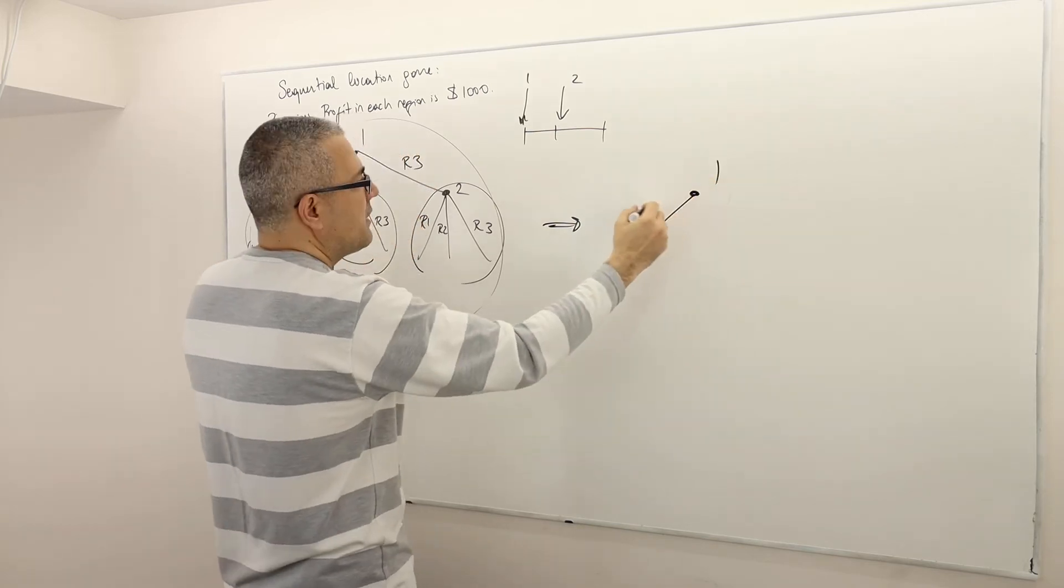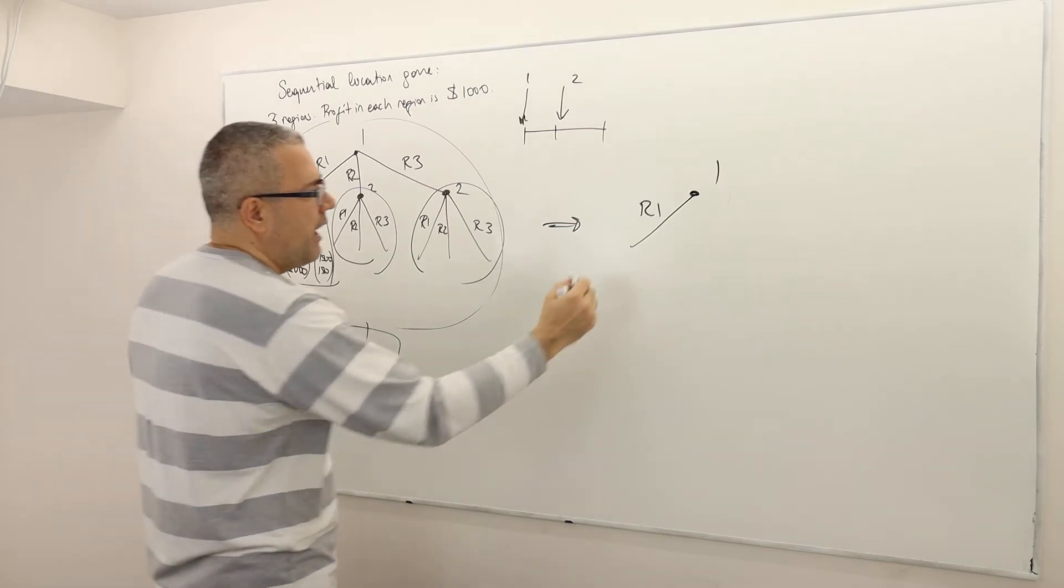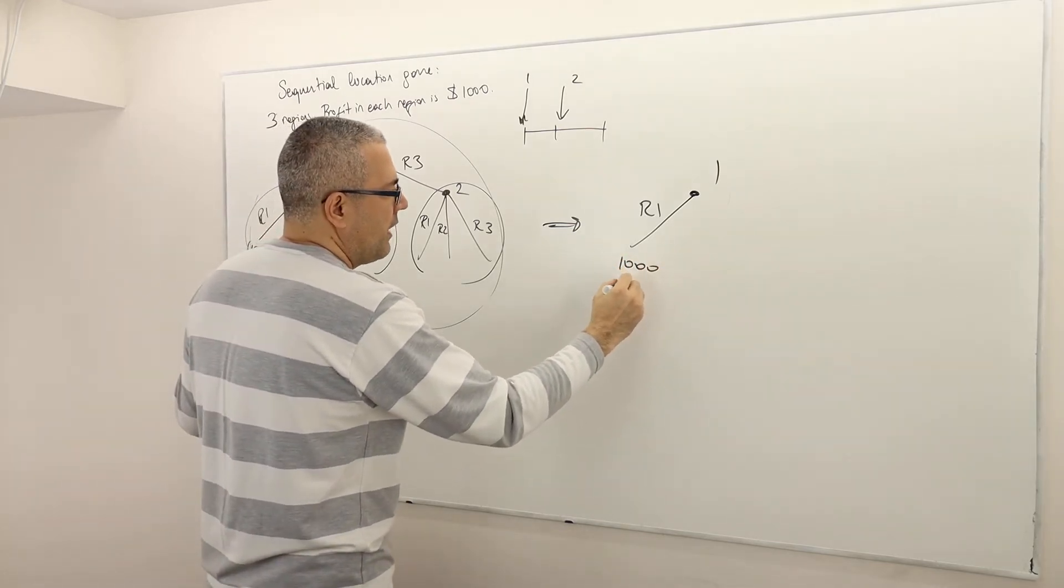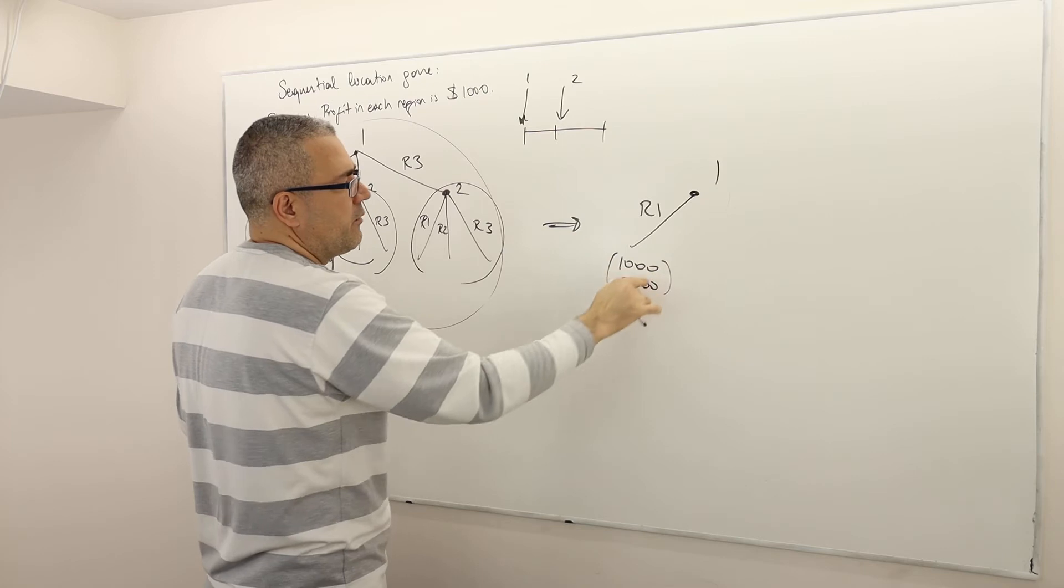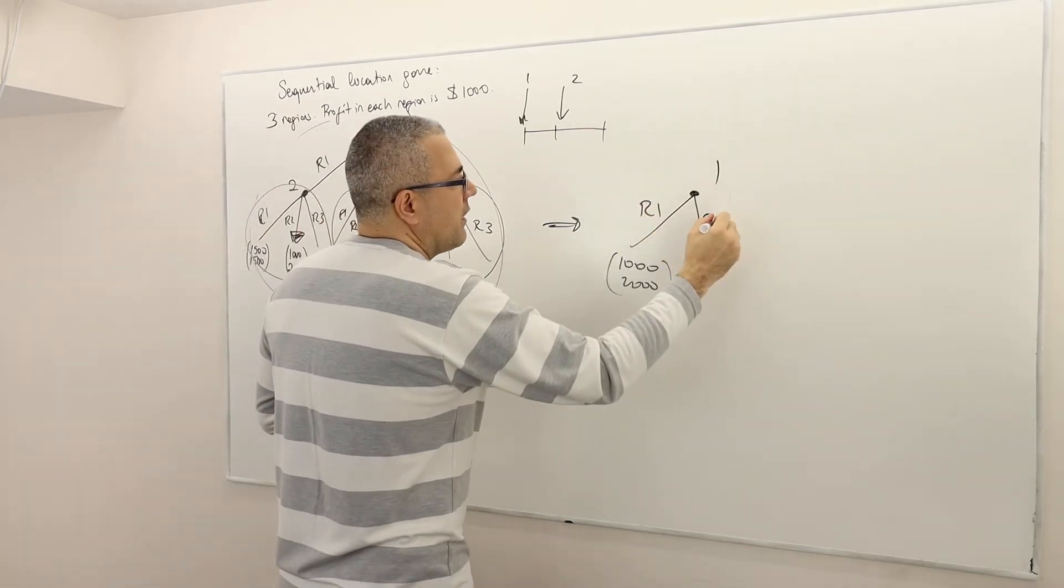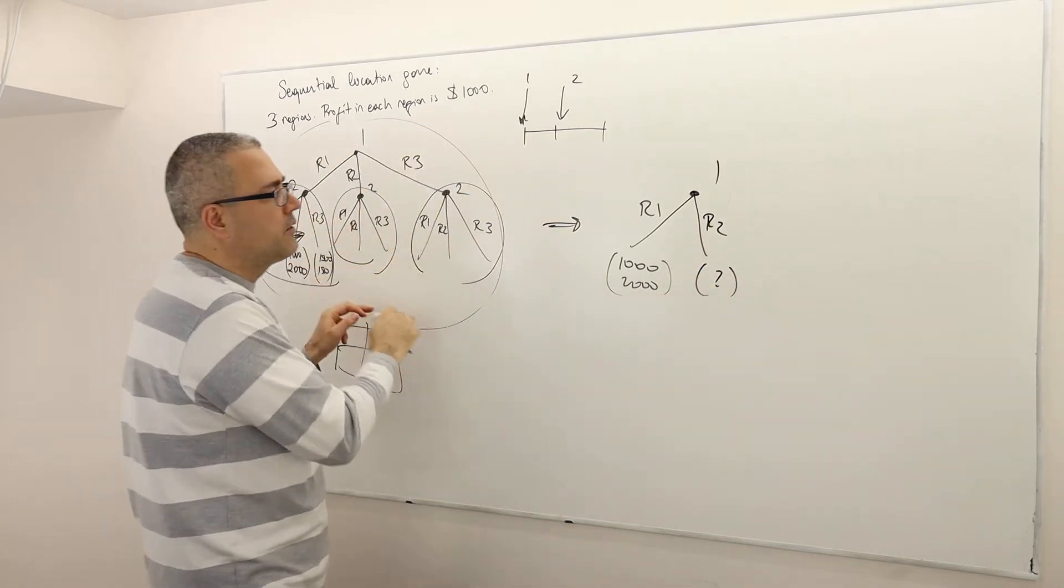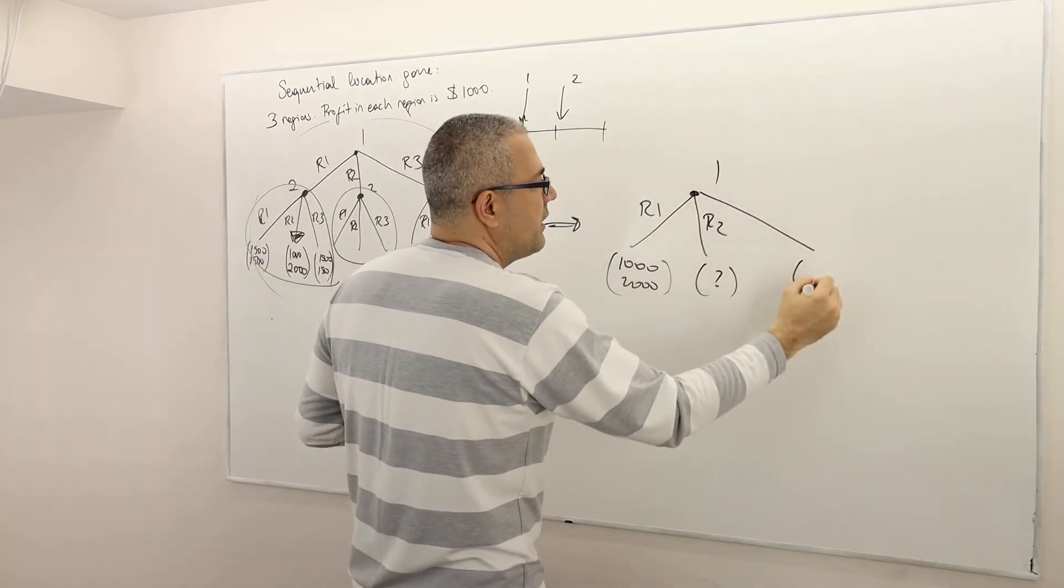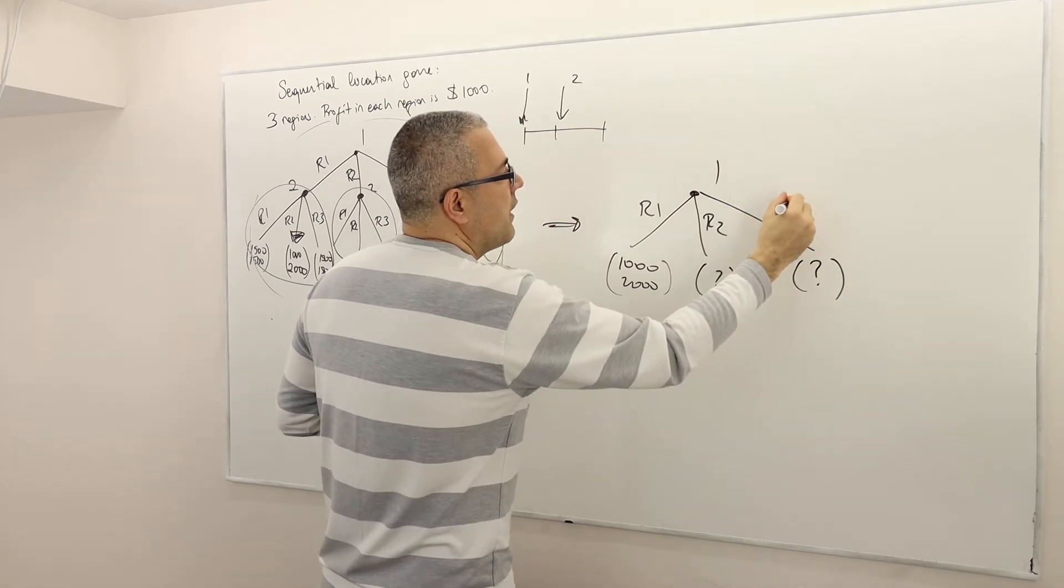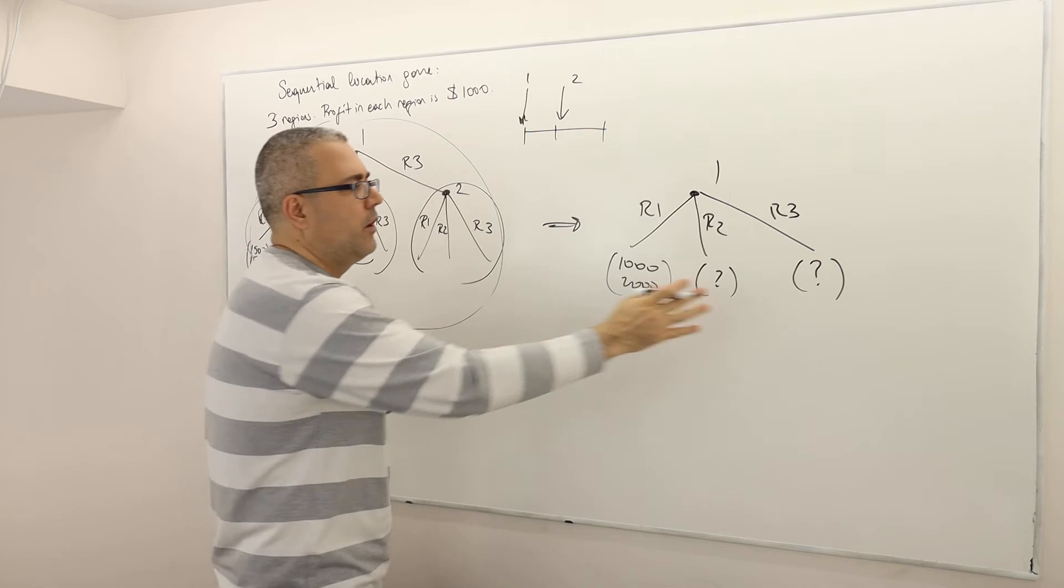Once player one selects R1, he knows that two is going to select R2, and so they're going to end up with payoff $1,000 to $2,000. Well, obviously, player one doesn't care about the second guy's payoff. But when it is R2, well, again, you have to figure out the optimal strategy for player two here. And then once player one chooses R3, you have to figure out the optimal action here.